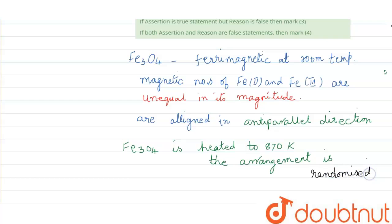The arrangement is randomized, and when it is randomized, it becomes paramagnetic.